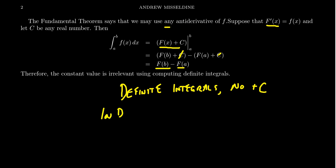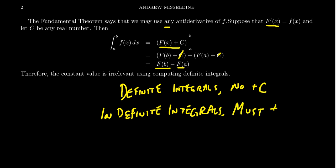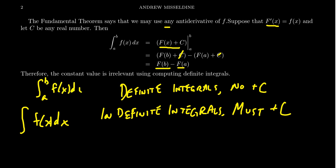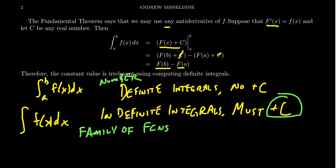For indefinite integrals, you must have the plus c, because the indefinite integral represents the general antiderivative of the function. You'll see the indefinite integral written as the integral of f(x) dx with no bounds. The definite integral, on the other hand, has bounds from a to b. The definite integral gives us a number — the area under a curve. The indefinite integral gives us a family of functions, the antiderivatives of little f, and the plus c is necessary to capture that general family.